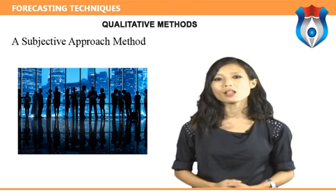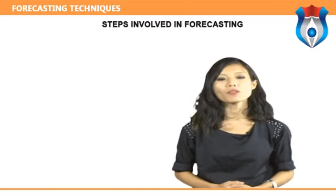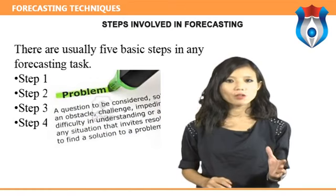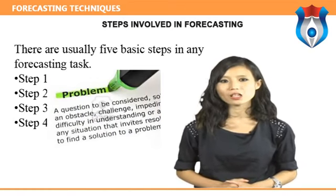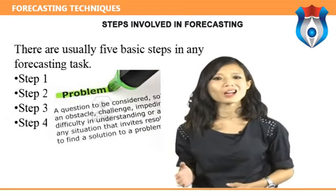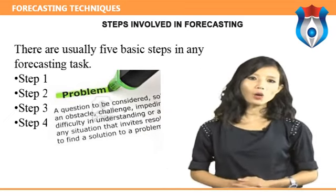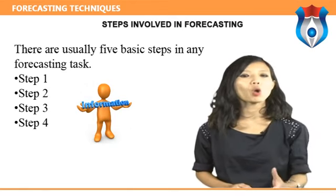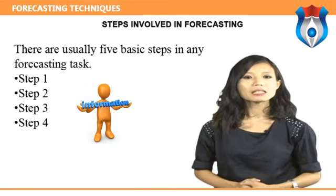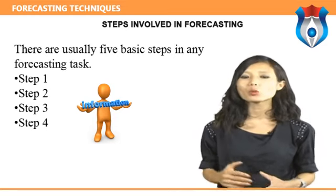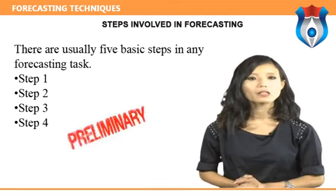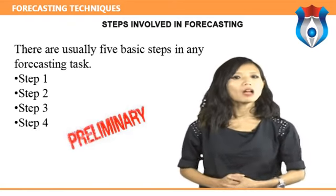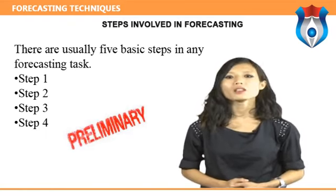Steps involved in forecasting: there are usually five basic steps in any forecasting task. Step one — problem definition: often this is the most difficult part of forecasting. Defining the problem carefully requires an understanding of how the forecast will be used, who requires a forecast, and how the forecasting function fits within the organization requiring the forecast. Step two — gathering information: there are always at least two kinds of information required — statistical data, and accumulated expertise of the people who collected the data and use the forecast.